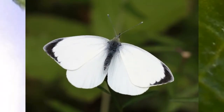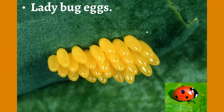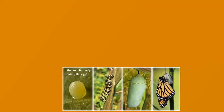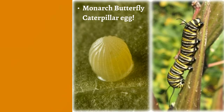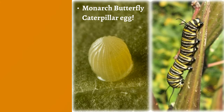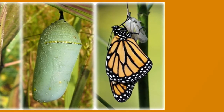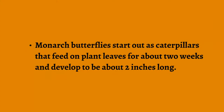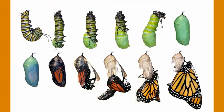Here are large white butterfly eggs that will grow into a pretty white butterfly, and ladybug eggs. Monarch butterfly caterpillar eggs look like this — they'll form into a caterpillar about two inches long and then progress into a chrysalis, transforming into a really pretty monarch butterfly. Monarch butterflies start out as caterpillars that feed on plant leaves for about two weeks, then attach themselves head-down to a twig, shed their outer skin, and begin to transform. This stage is called a pupa, and after about two weeks the caterpillar transforms completely into a butterfly.